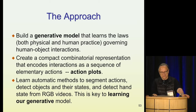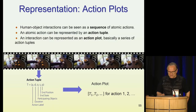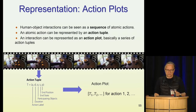The key representation is the high-level one, which we call action plots. We model interactions as a sequence of atomic actions. Every action can be represented by an action tuple that encodes the object involved, where you start, where you end, and the duration. A plot then becomes a sequence of these action tuples.